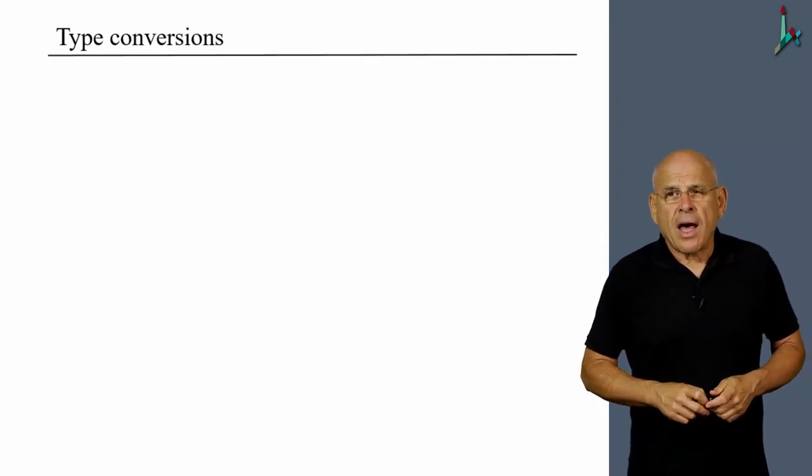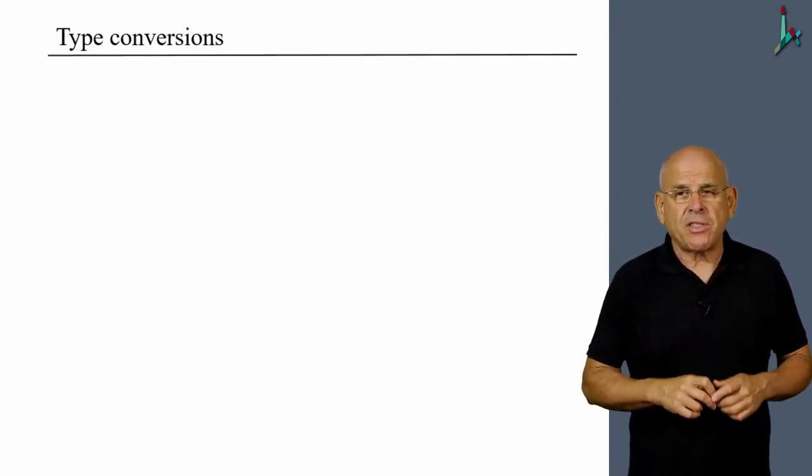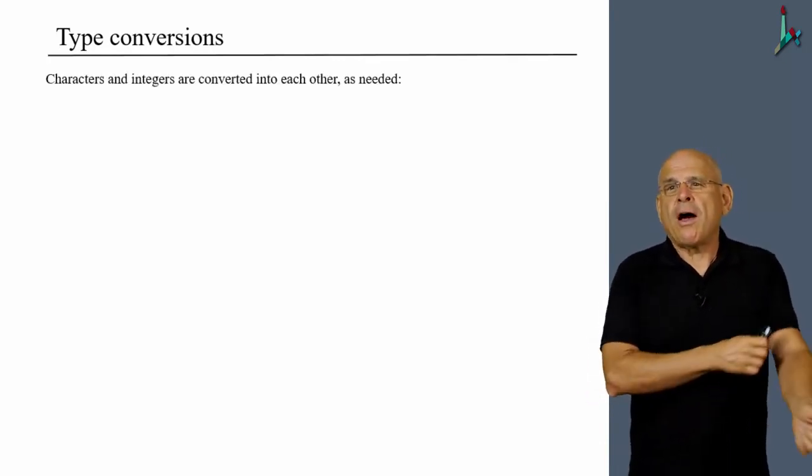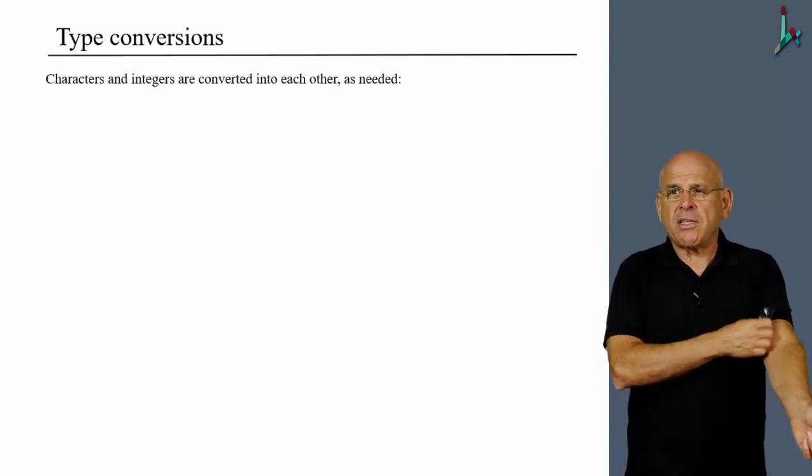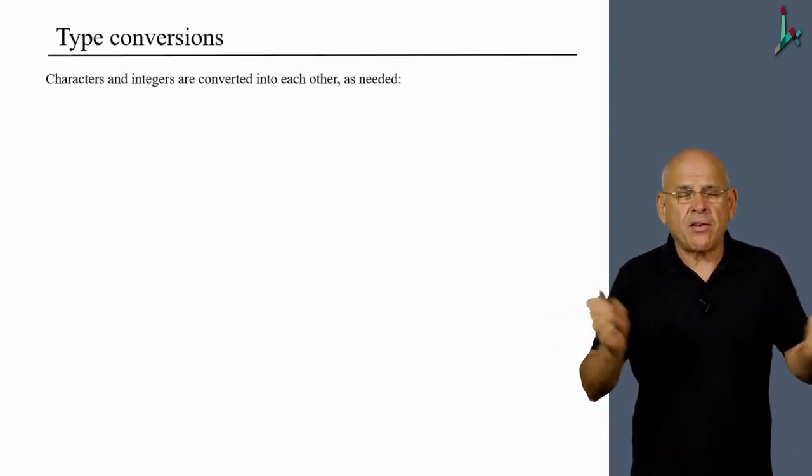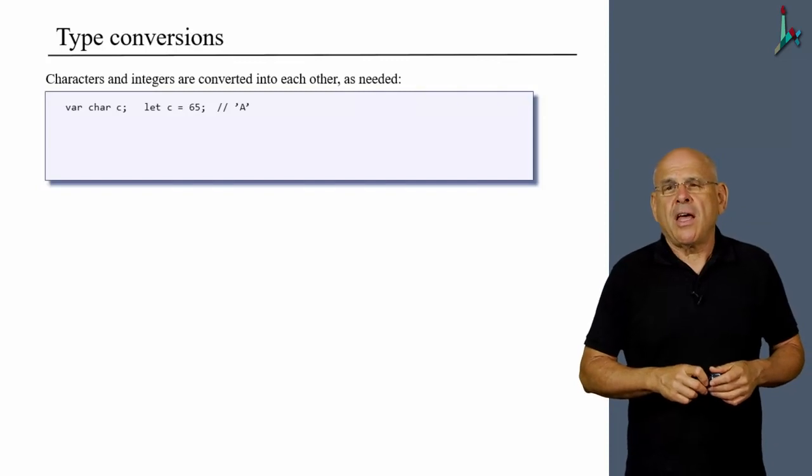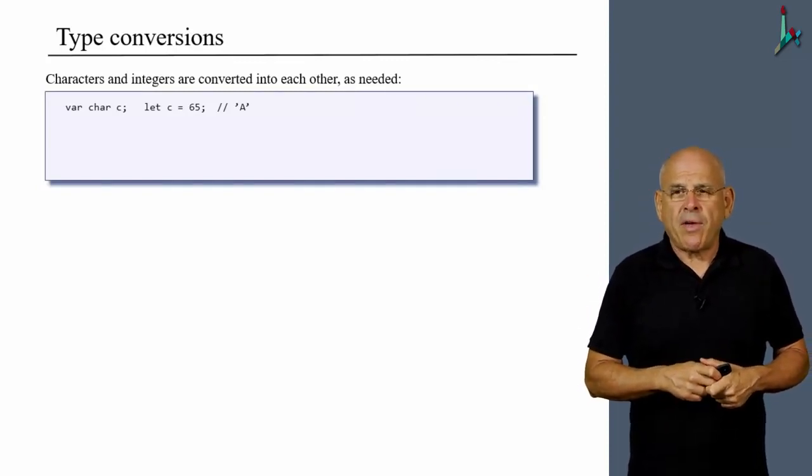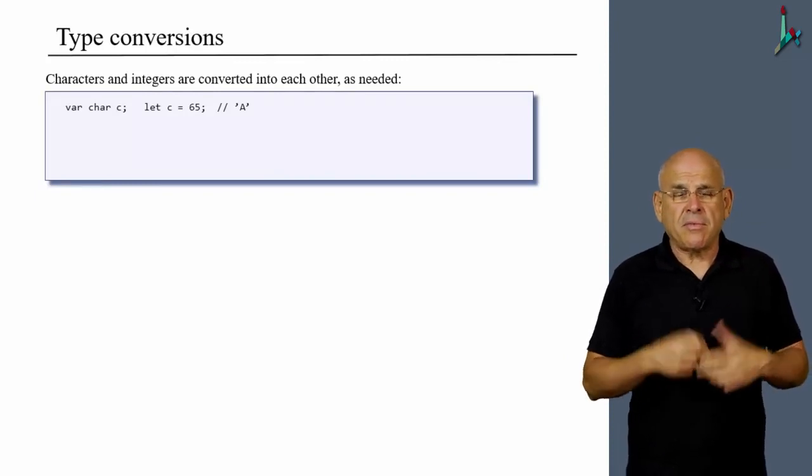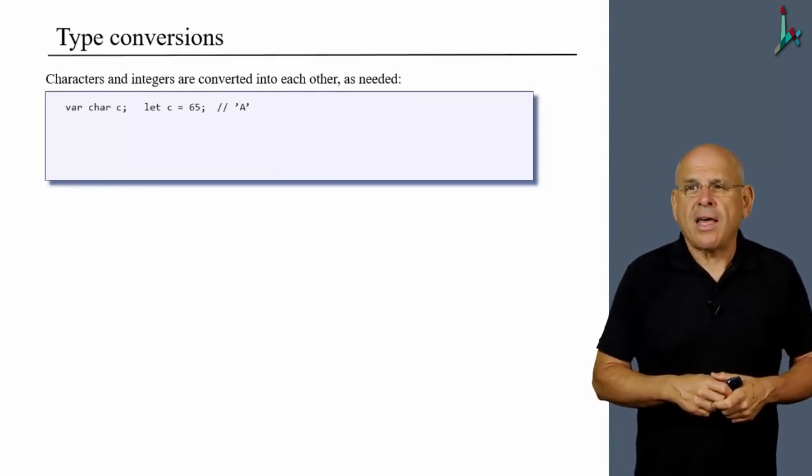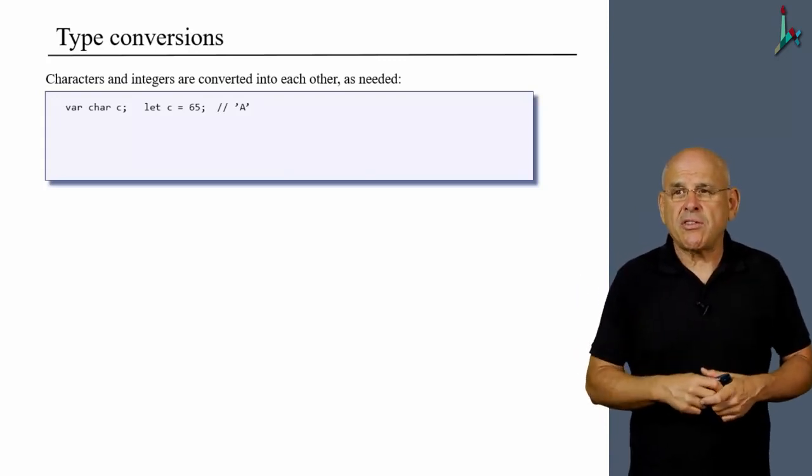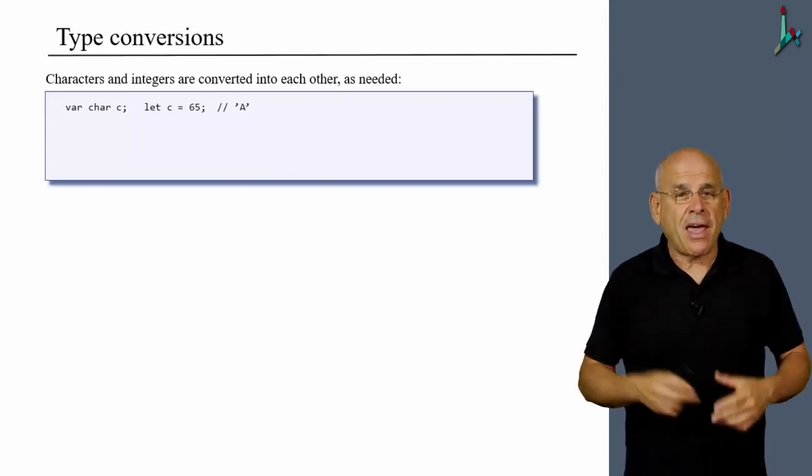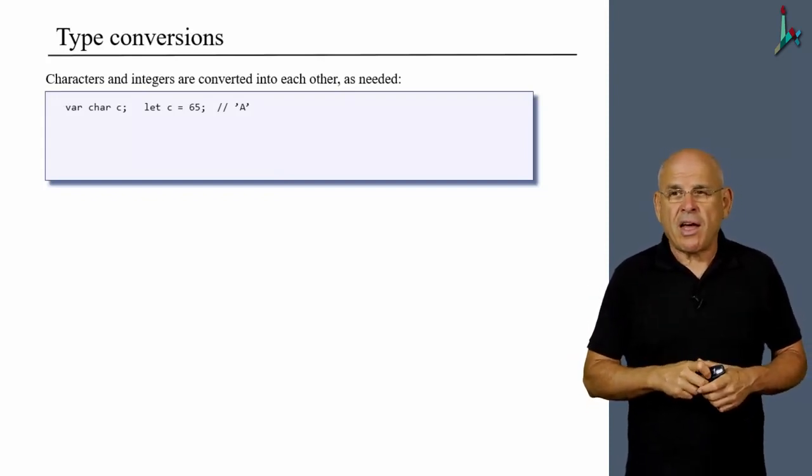Moving along, I'd like to demonstrate type conversions in Jack, which may well be quite wild. First of all, characters and integers can be converted into each other at will and as needed, and this is quite similar to what can be done in other languages. So if we have a character variable called c, I can say c equals 33, where 33 is just an integer value. And this will give me the representation of capital A according to the ASCII code.